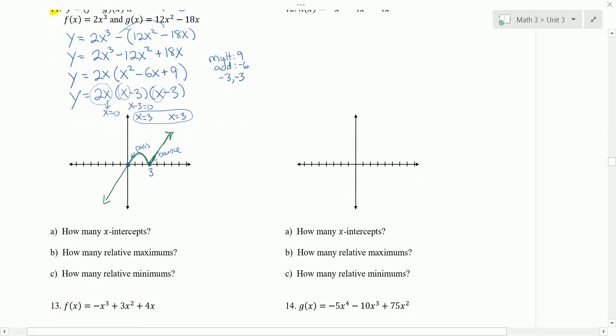A asks how many x-intercepts there are. Well, there are two distinct x-intercepts. How many relative maximums? There's one relative maximum. A relative maximum is where the graph changes from increasing to decreasing. And that actually happens at 3, 0.